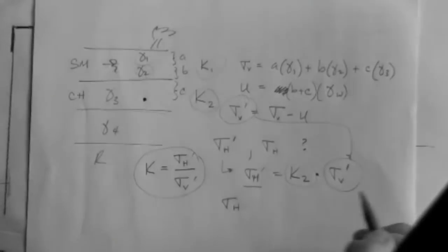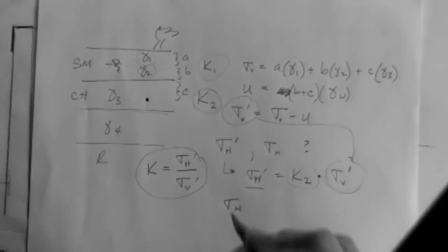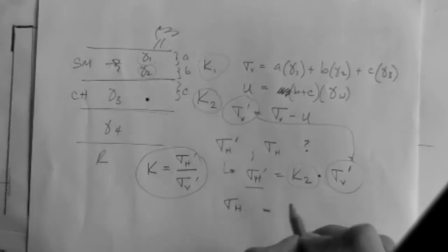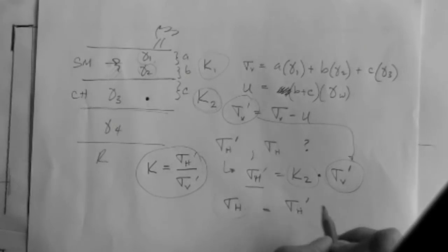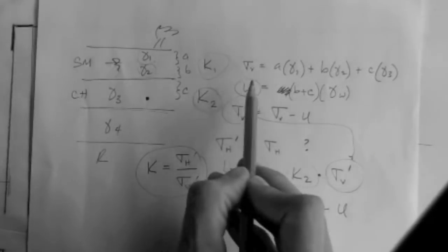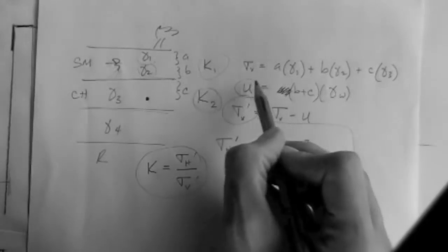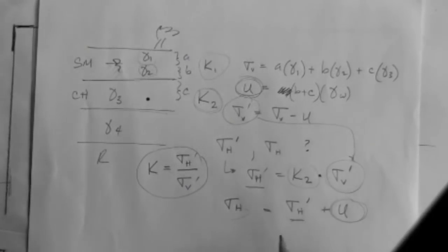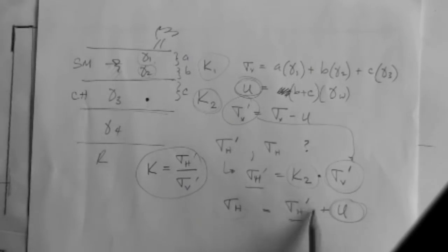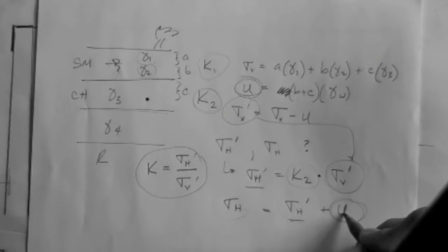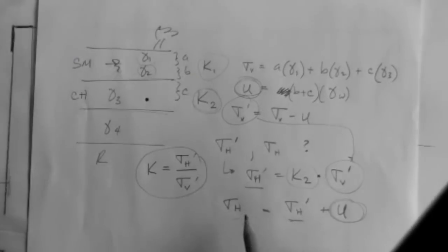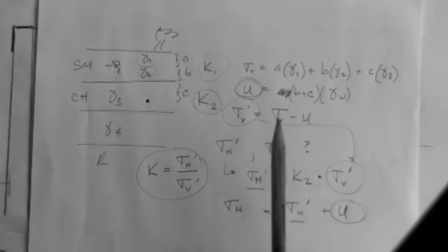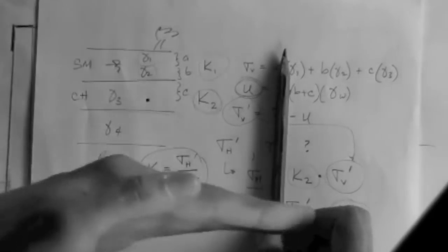Sigma_h equals sigma_h prime plus u. What the particles feel on the vertical plane at this point, plus what the water feels on all planes — because pore pressure acts equally in all directions — equals what both particles and water feel on the vertical plane. Remember that the horizontal stress acts on the vertical plane.